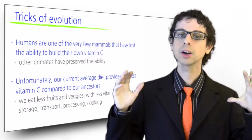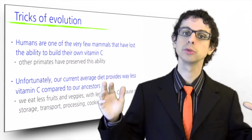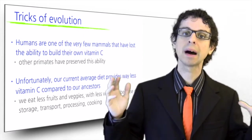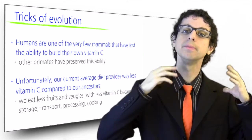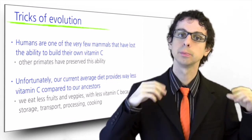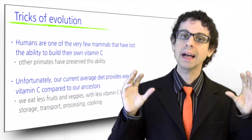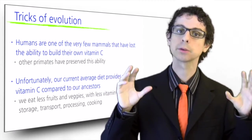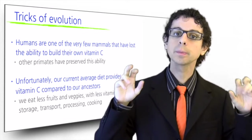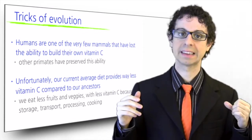As a result of this evolutionary trick, nowadays most people do not get from food the amount of vitamin C that they would have made by themselves had they not lost the necessary enzyme to build it in the liver. Many researchers have tried to estimate what exactly this amount would be to determine the optimal dose of vitamin C to remedy this metabolic disadvantage of humans.